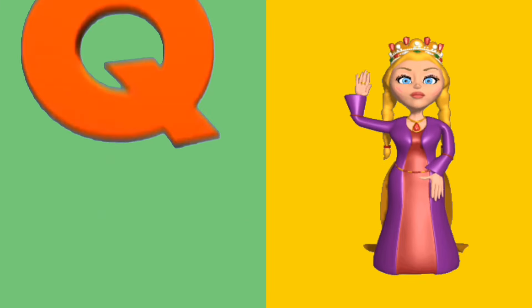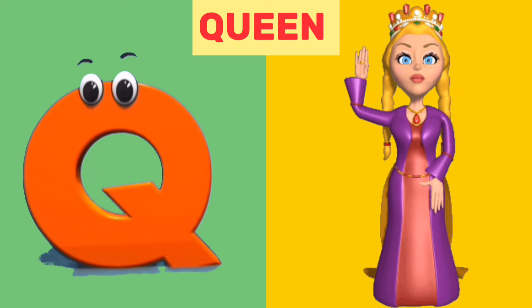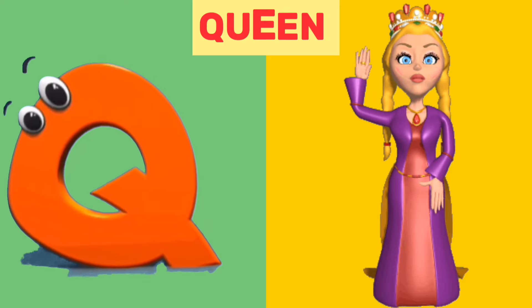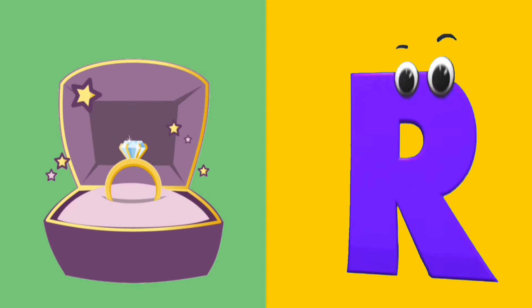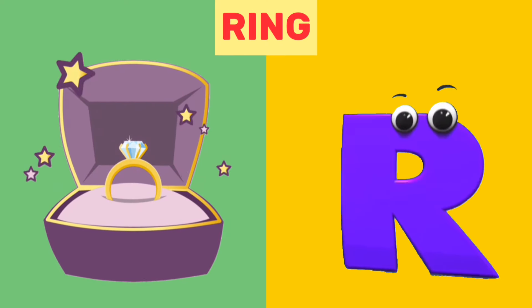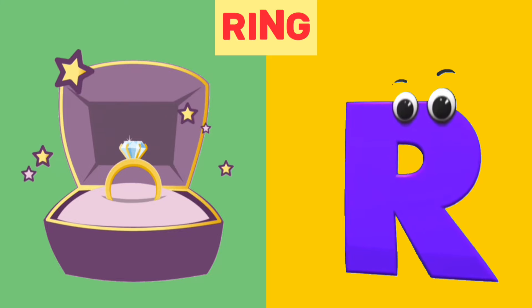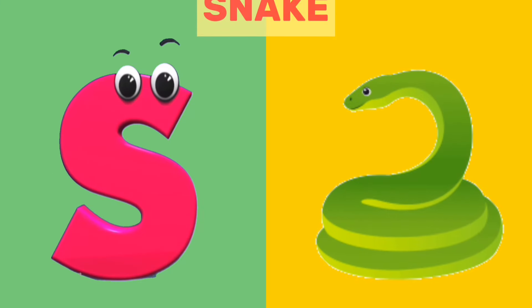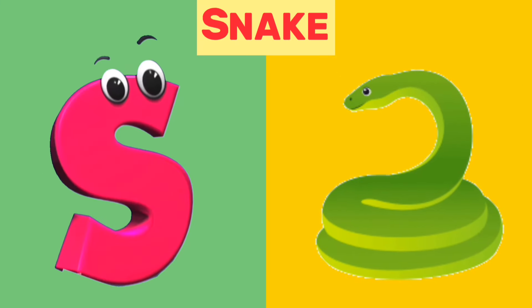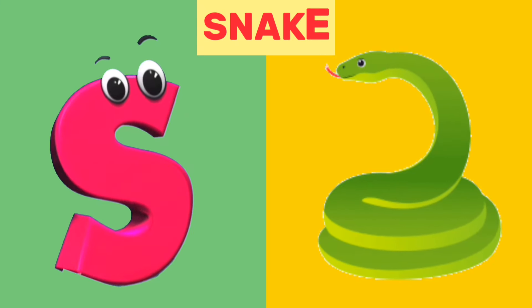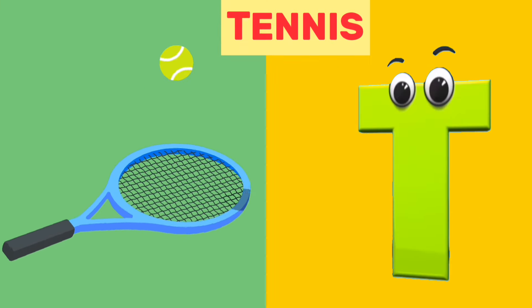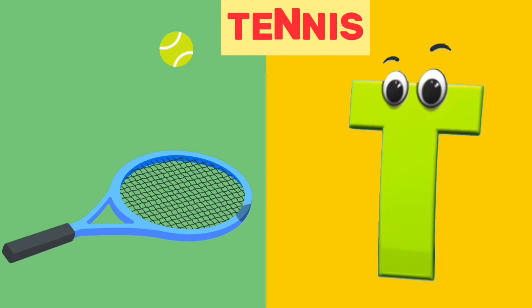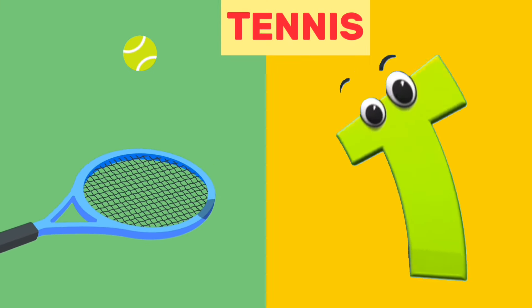Q is for queen, q, queen. R is for ring, r, ring. S is for snake, s, snake. T is for tennis, t, tennis.